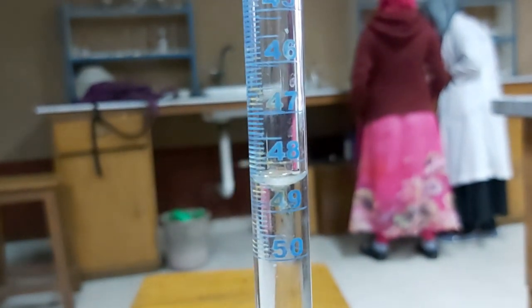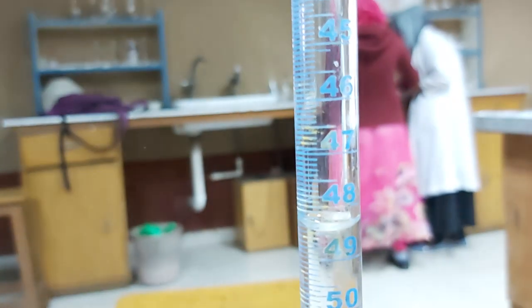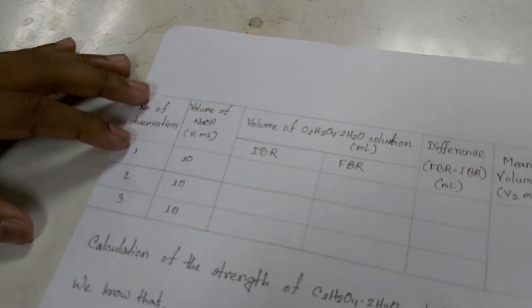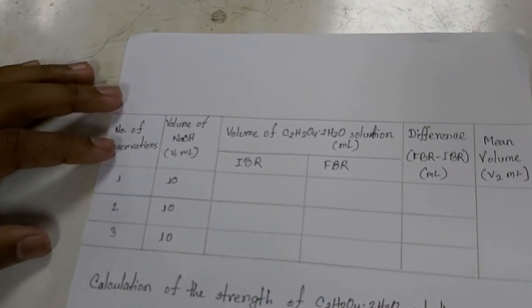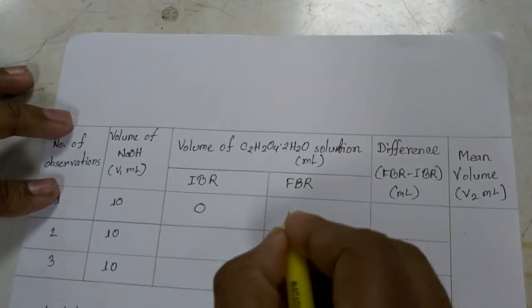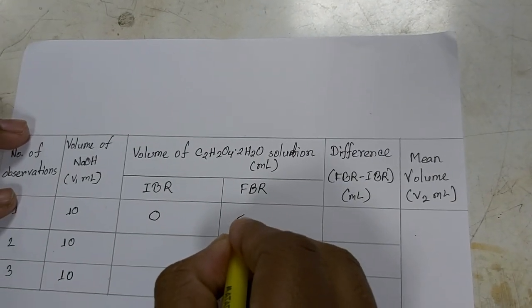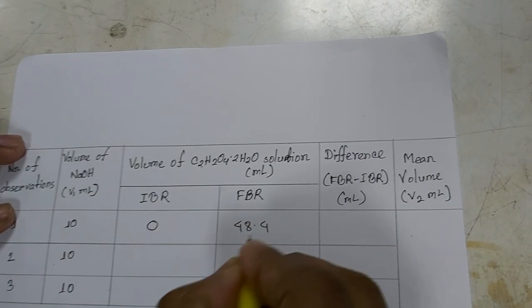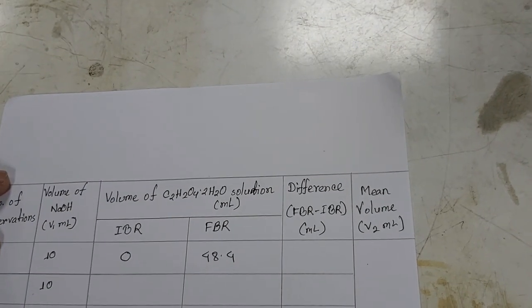The reading is about 48.3. This is the endpoint of this titration. Now for the calculation, we write the initial burette reading, which was 0, and the final burette reading, which was 48.4. The difference is 48.4.